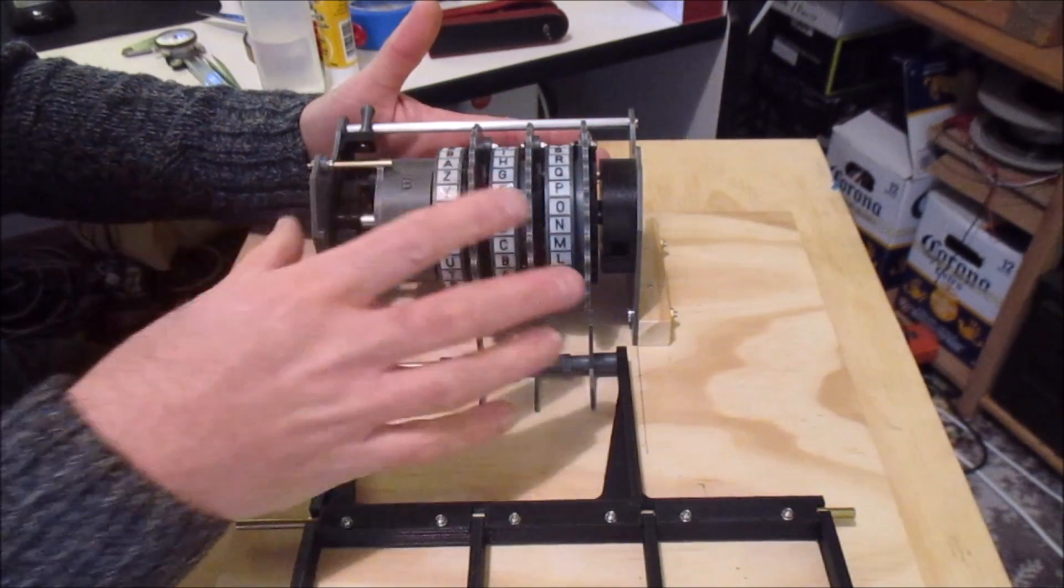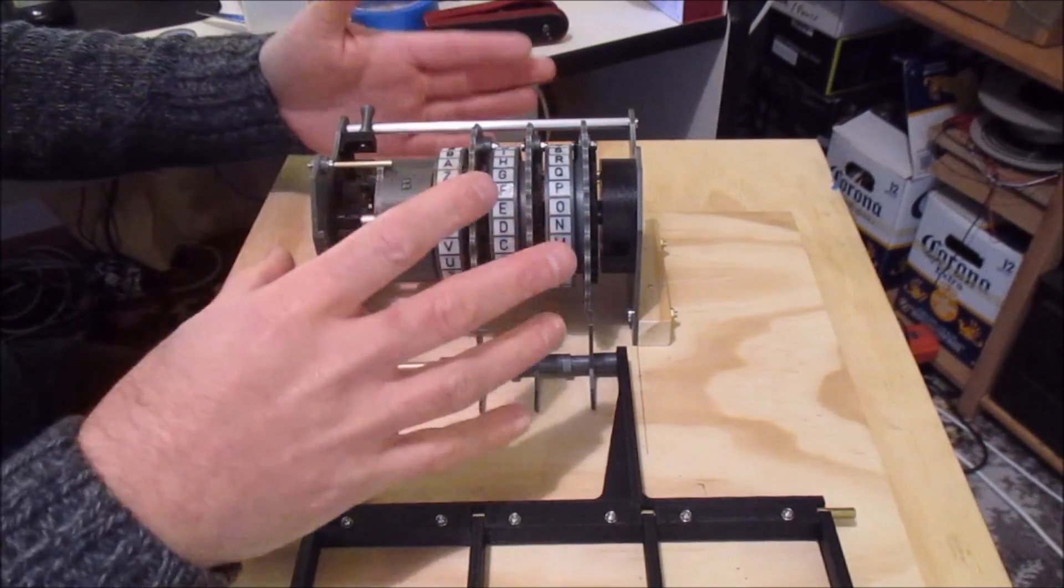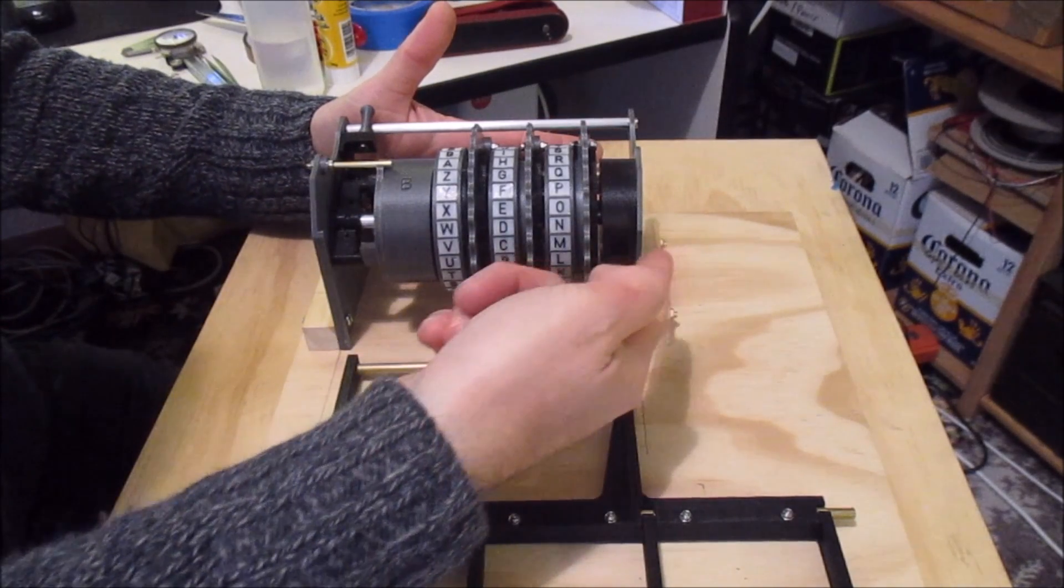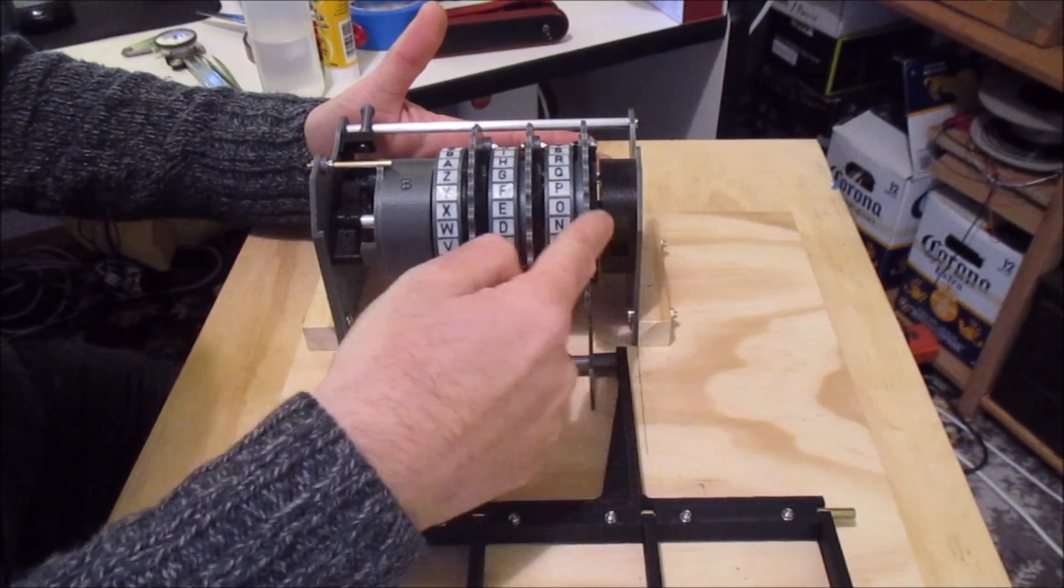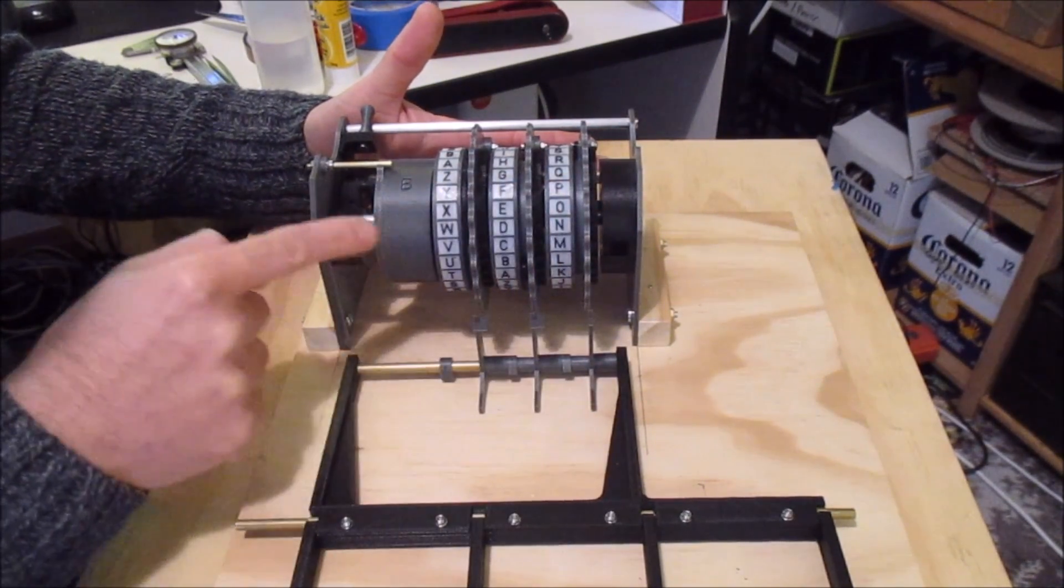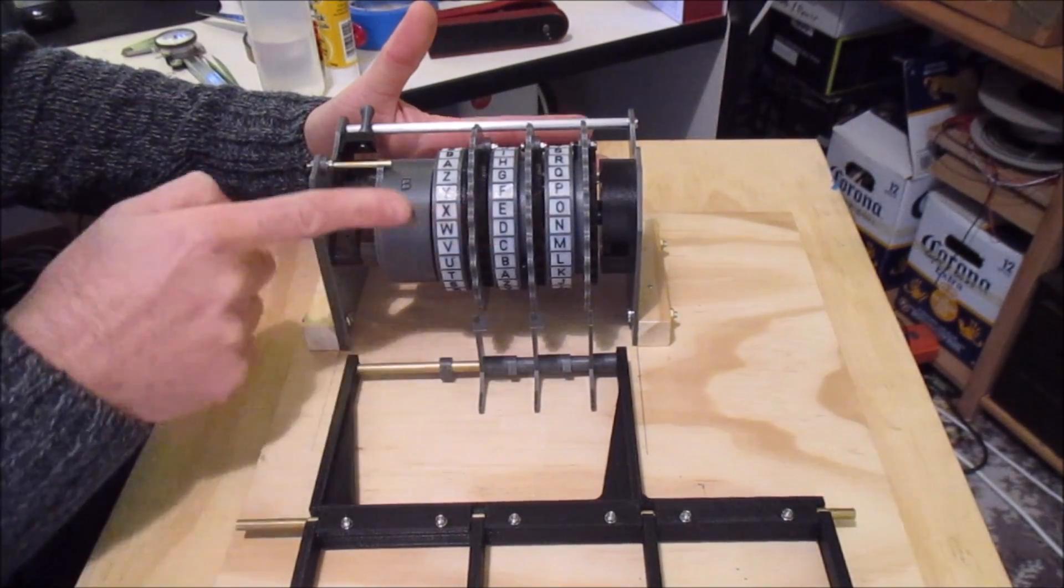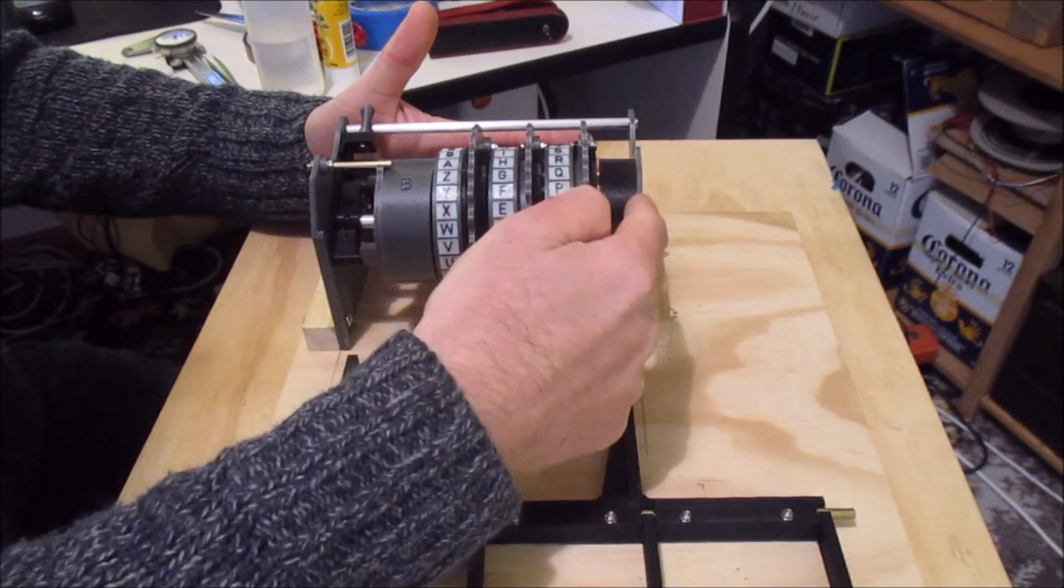When I was building the bomb, I called this a scrambler to break it into and put it in as a single unit. So what it does is you feed a signal in here and it goes through the rotors onto the reflector, which does exactly what it says. It reflects the signal back in and then it goes back through the rotors and back out the entry wheel.